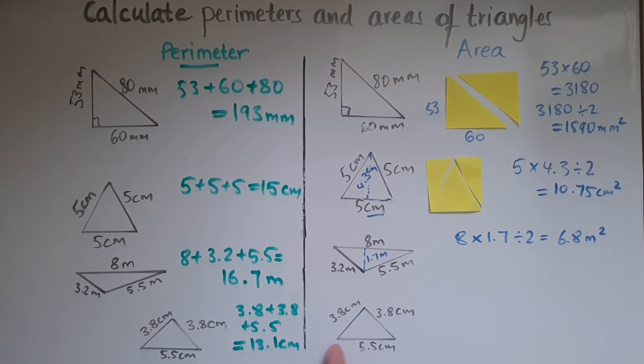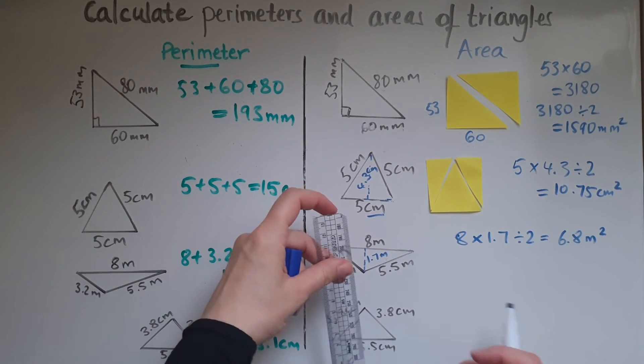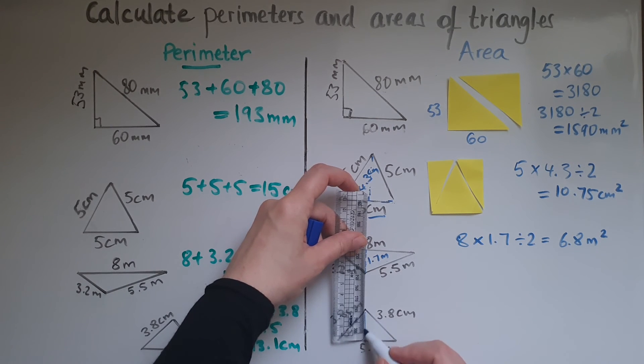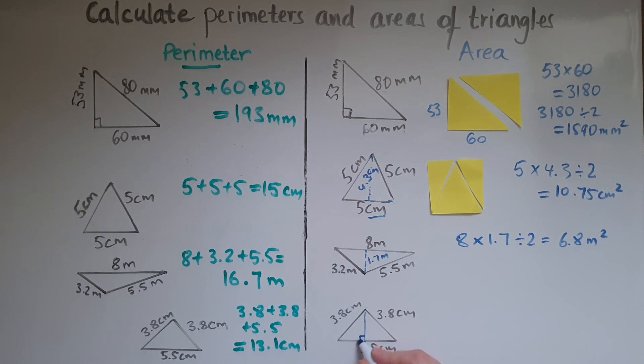Same thing with the other one. We've got the base. We've got to get the height. So that would be a right angle here. And this is approximately 2.7 centimeters. So I go 5.5 times 2.7 divided by 2 to give us 7.425 centimeters squared.